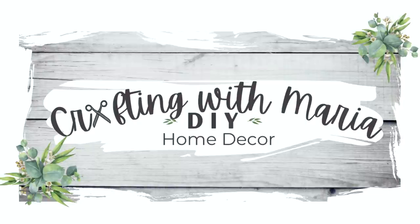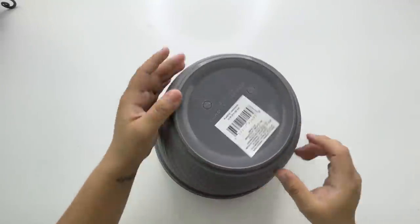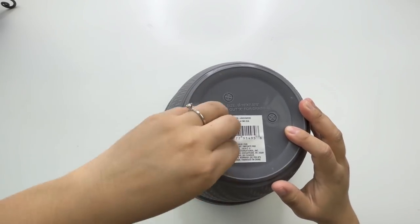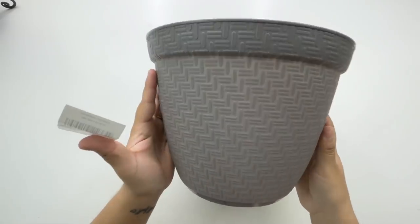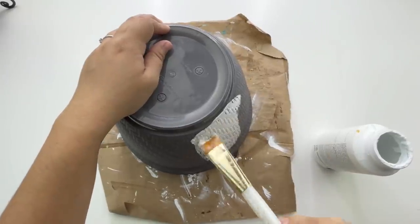From Dollar Tree, I'm going to use this planter and I'm going to paint the bottom part using some white chalk paint. I am going to leave the rim this beautiful gray color.